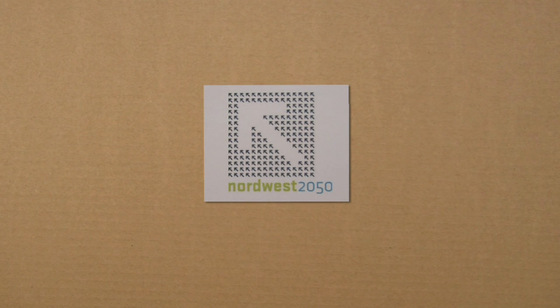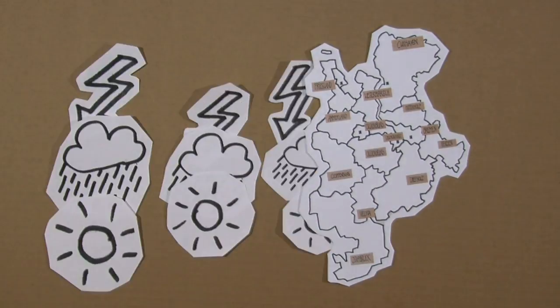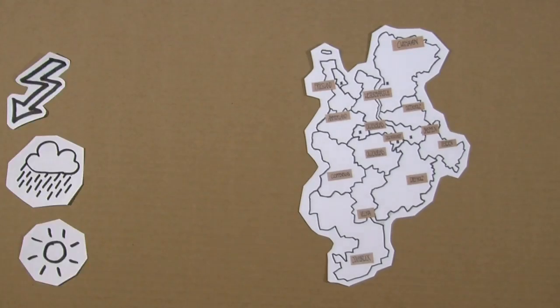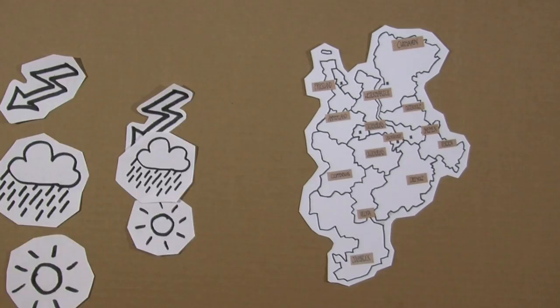The project Northwest 2050 researches how climate change will affect the metropolitan region Bremen-Oldenburg in particular and how we can adapt to the foreseeable consequences. For this, we have to know how the climate will develop in future.